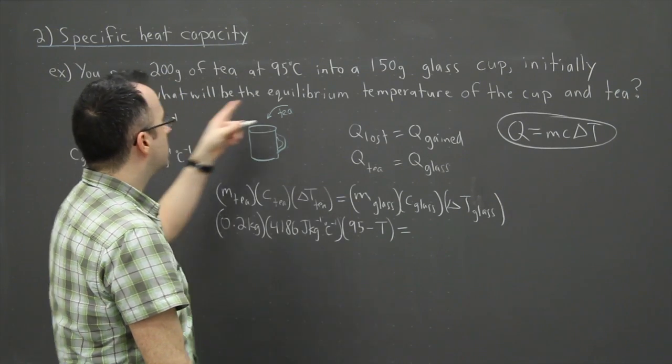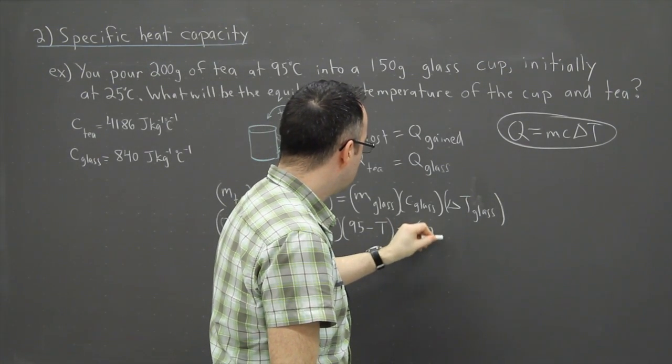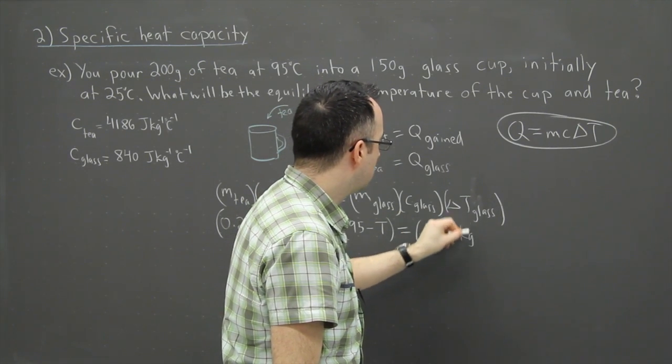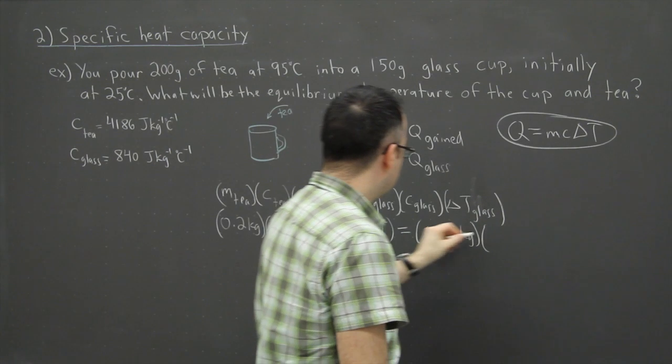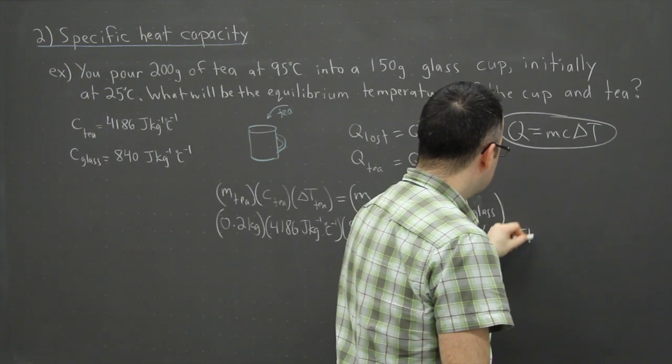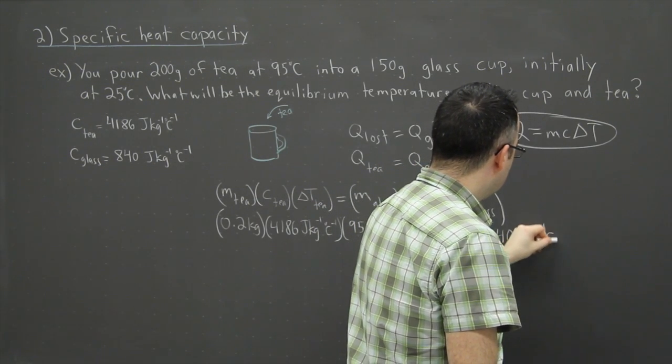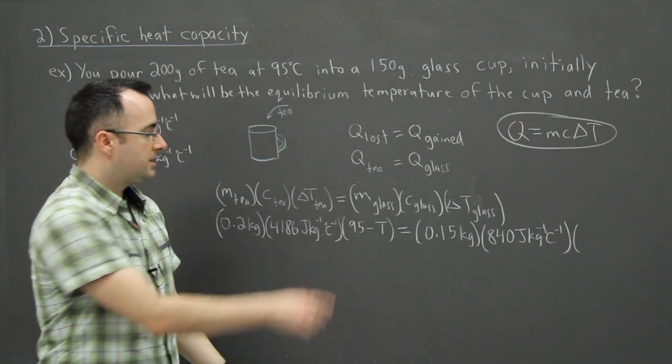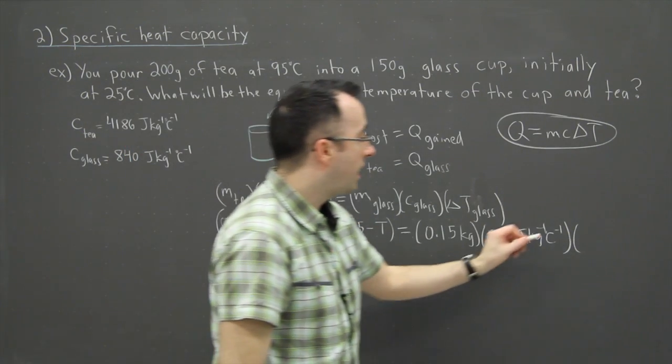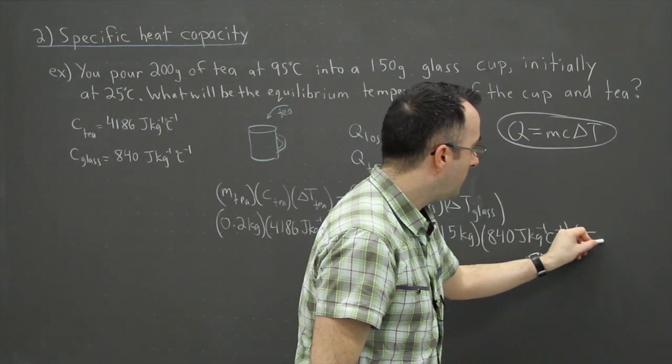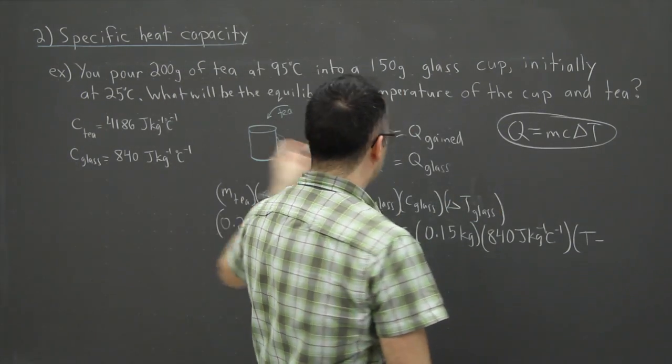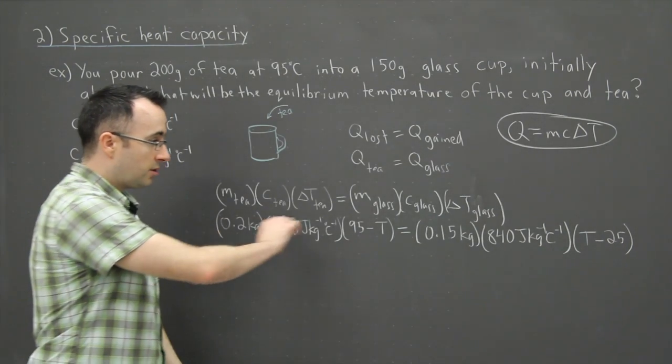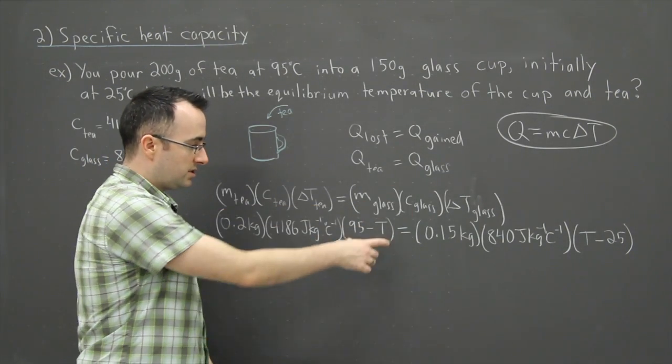I'll do the same thing here. So the glass, the mass of the glass is 0.15 kilograms times its specific heat capacity, 840 joules per kilogram per degree Celsius. All that's going to be times, now this time the T is going to be reversed. In other words, there's going to be a high equilibrium temperature compared to its initial temperature of 25. So in this case that was the key to doing this, just setting it up correctly.